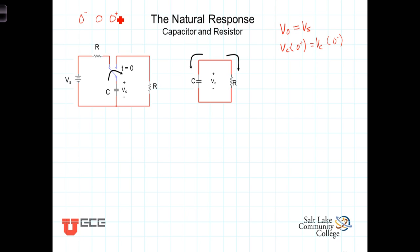Because we can't instantaneously change the voltage across the capacitor, the voltage across the capacitor right after it switches is equal to the voltage across the capacitor right before it switches. Depending upon which book you're referring to, you'll see the initial voltage referred to as V sub C of zero plus, and sometimes referred to as V naught. We'll use those two expressions interchangeably.